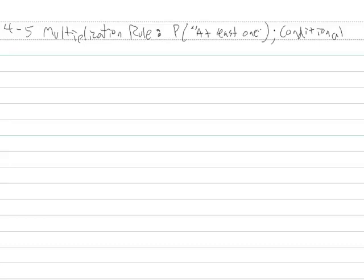In this video we're going to look at some advanced applications of the multiplication rule. First, the probability of getting at least one of something in repeated trials, and then we'll look at conditional probability.